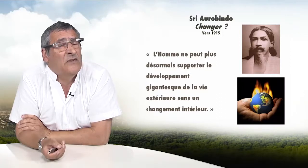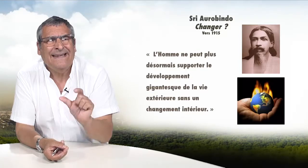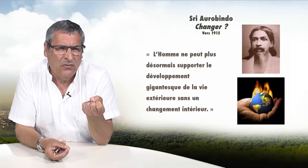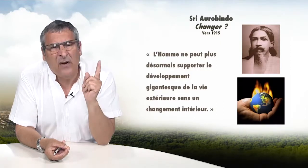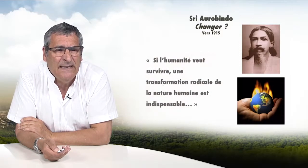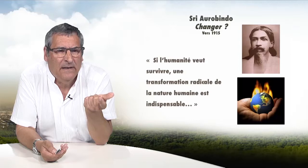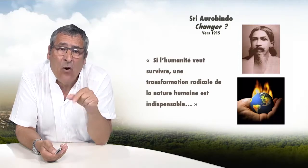I will now discuss Sri Aurobindo, a great Indian thinker who in 1915, before environmentalism even existed, said that men create so many disturbances in their environment that this gigantic development of life outside cannot change without a change within humans. And if we wish to survive, we need a radical transformation of human nature — that is a prerequisite. We're going to connect basic science to observations and philosophy, connecting science and human sciences to hard science and developmental sciences.